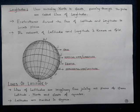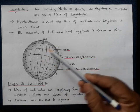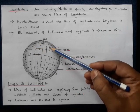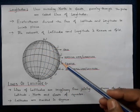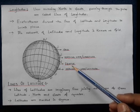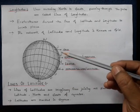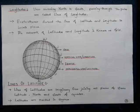Lines of latitudes are imaginary lines joining all places of the same latitude, north and south of the equator. These are horizontal lines that run parallel to each other. Zero degrees is marked as the equator on the globe, and latitudes are marked in degrees — like 0°, 40°, 60°, and so on — up to the pole, which is marked as 90 degrees.